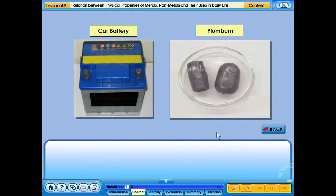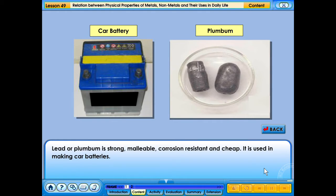Uses of lead in daily life. Lead or plumbum is strong, malleable, corrosion-resistant and cheap. It is used in making car batteries.